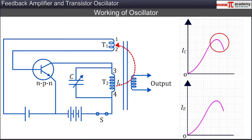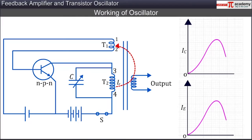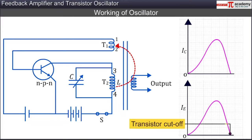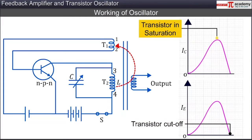The decreasing collector current in coil T2 sends a negative feedback through induction to coil T1. The negative feedback further decreases the emitter current and the collector current till both become zero. At this stage, the transistor is back to the cut-off state. From the cut-off state, the transistor moves to saturation state and back. The cycle continues giving rise to an AC output.